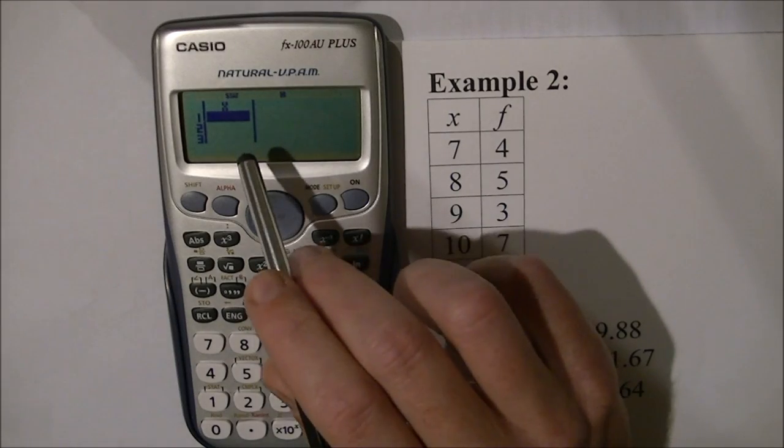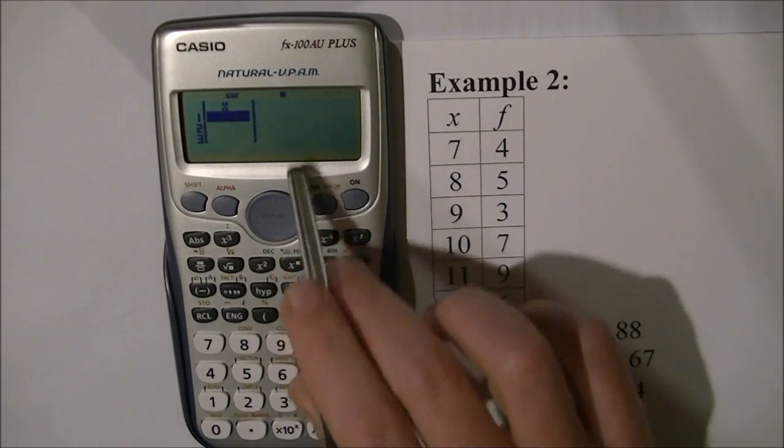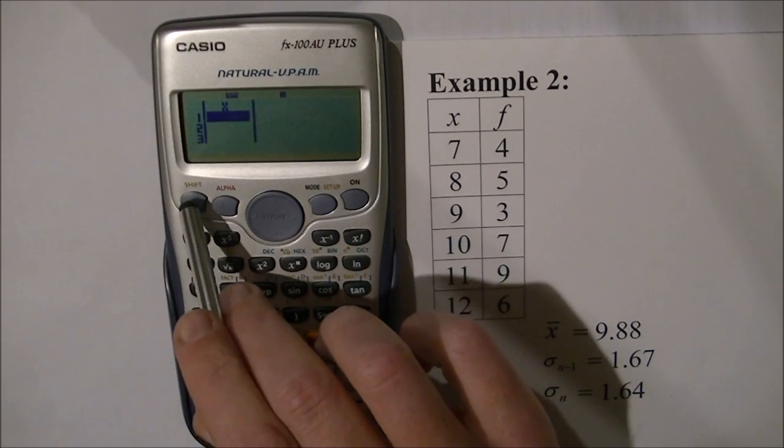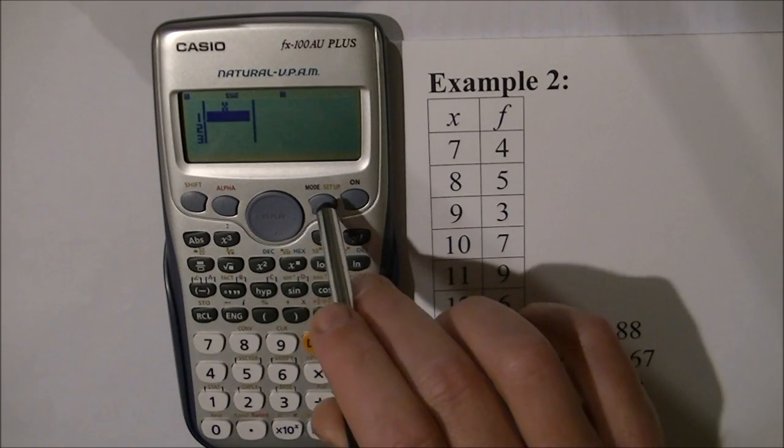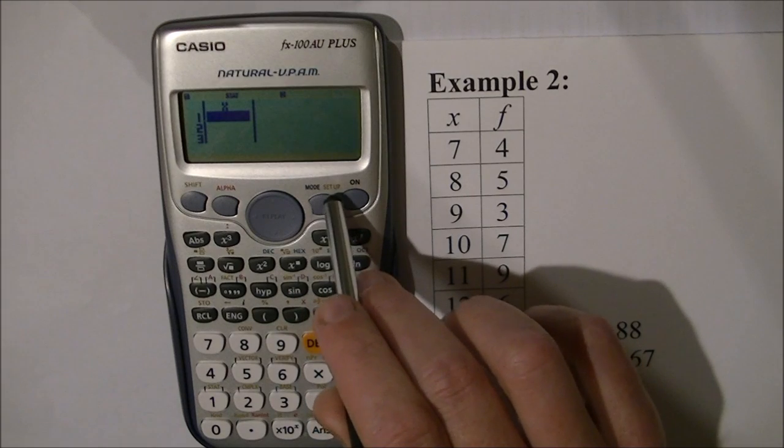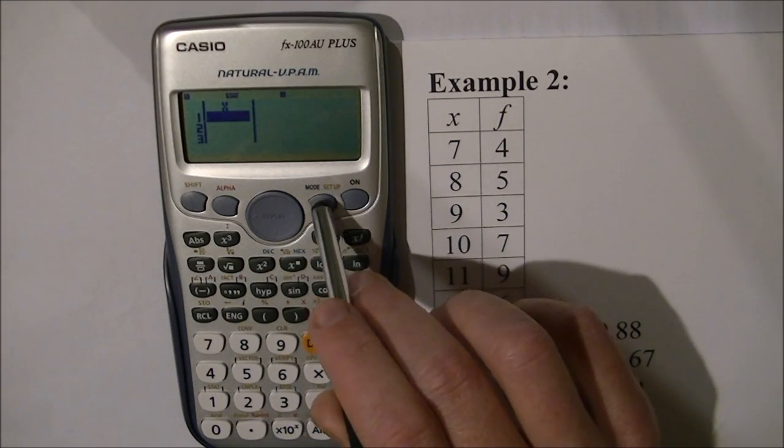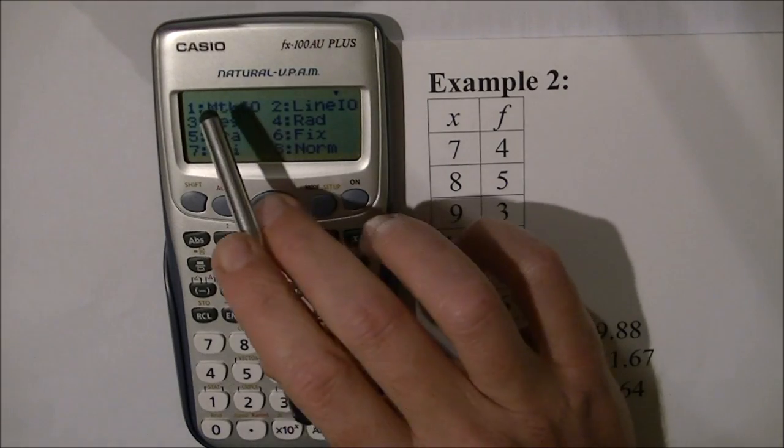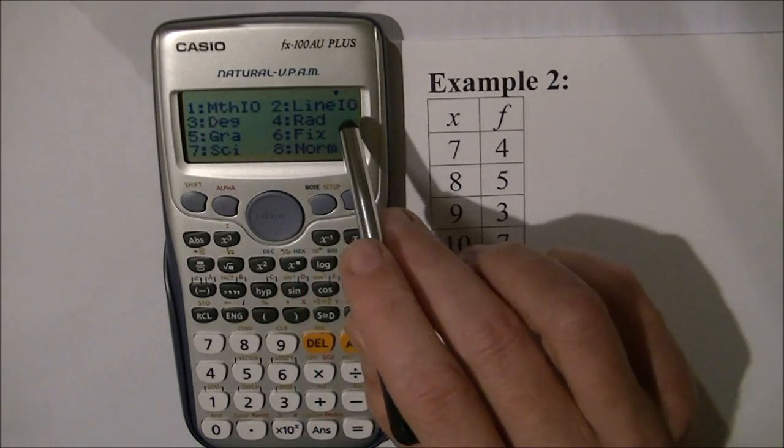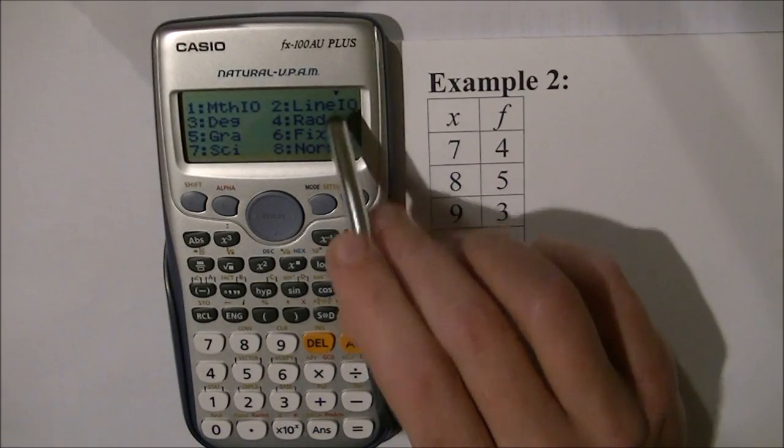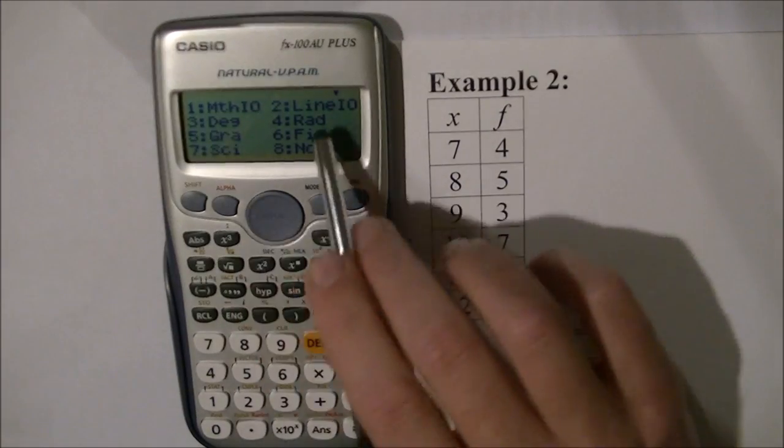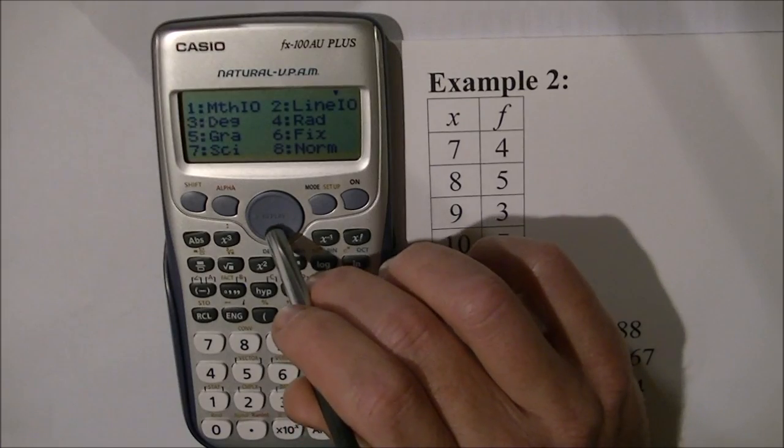On this calculator, I can set up a frequency column. Press SHIFT, then MODE. This accesses the SETUP menu. Press MODE, and these options appear. In the top corner, there's a down arrow, meaning there are more options. Press the DOWN button.